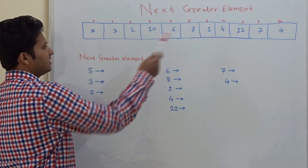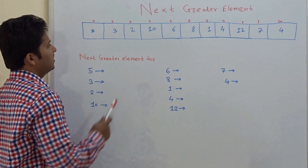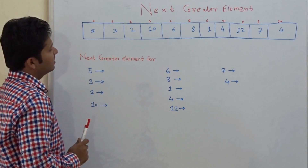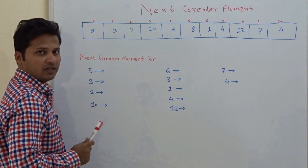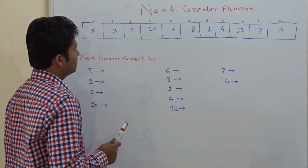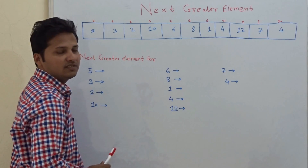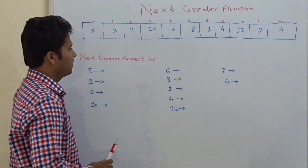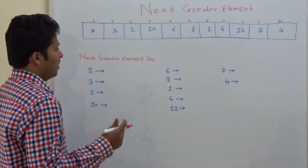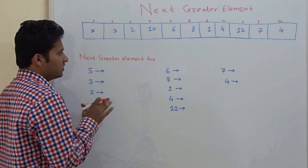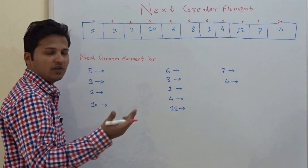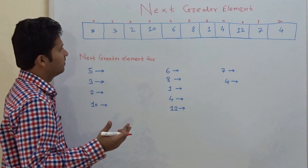You can see this array. This array contains 11 elements in it. We are going to find out the next greater element for each of the elements in the array. First we will see the output, then I will tell you the algorithm.